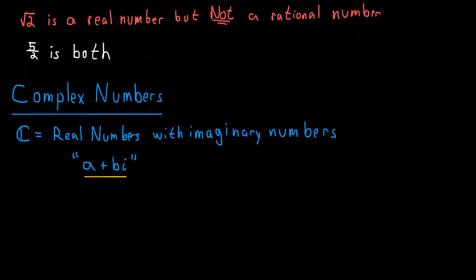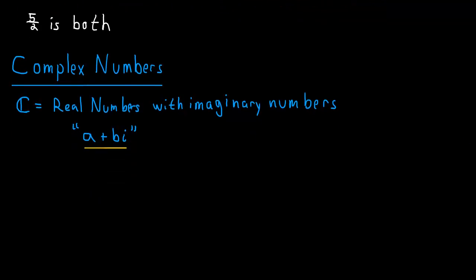Finally, we get to the complex numbers, which are just real numbers with imaginary numbers, things of the form a plus bi, where a and b are real and i is the imaginary number square root of negative 1. Now if the complex numbers right now seem mysterious and weird to you, don't worry about it, we'll talk about it later.